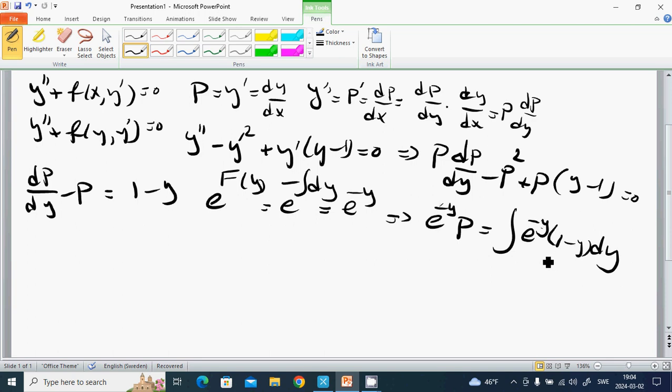Then this one: e^(-y)*P equals the integral of e^(-y)*(1-y) dy, which equals -e^(-y) - y*e^(-y) + C.